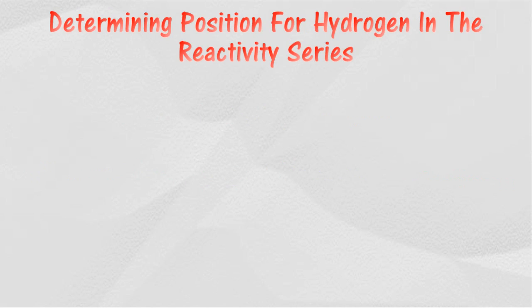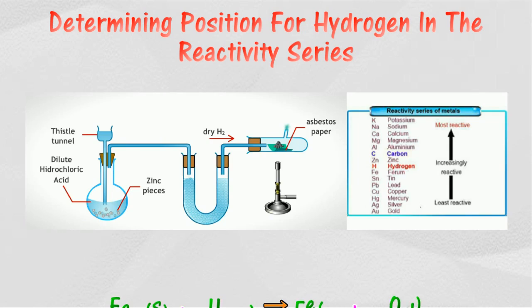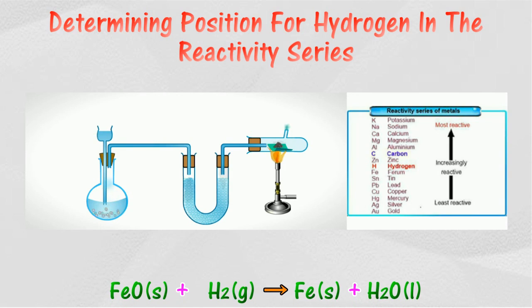The position for hydrogen in the reactivity series can be determined by reduction of metal dioxide by hydrogen. For example, hydrogen can reduce iron(II) oxide to iron. This is because hydrogen is more reactive compared to iron. Hydrogen can attract oxygen from iron(II) oxide.